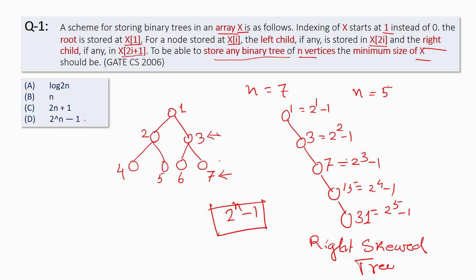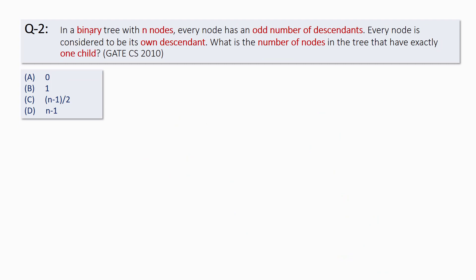So to store any kind of binary tree in the fashion described, we require a minimum of 2^n - 1 locations in array x. The correct answer is D. Now in the next problem: in a binary tree with n nodes, every node has an odd number of descendants.